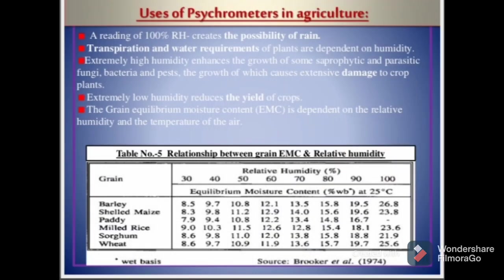Uses of psychrometers in agriculture: a reading of 100% relative humidity creates the possibility of rain. Transpiration and water requirements of plants are dependent on humidity. Extremely high humidity enhances the growth of some saprophytic and parasitic fungi, bacteria, and pests, causing extensive damage to crop plants. Extremely low humidity reduces the yield of crops. The grain equilibrium moisture content, or EMC, is dependent on relative humidity and the temperature of the air. Table number 5 shows the relationship between grain EMC and relative humidity for grains such as barley, shelled maize, paddy, milled rice, sorghum, and wheat.